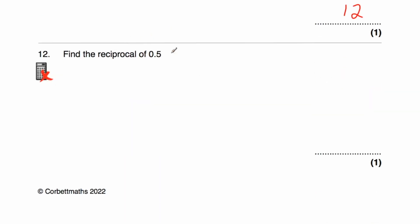Question 12 asks for the reciprocal of a decimal number. When finding the reciprocal of a decimal, it's useful to change it to a fraction first. 0.5 is a half, so we want the reciprocal of a half. Flipping it over gives 2 over 1, which equals 2. So the reciprocal of 0.5 is 2 — or think of it as: what do you multiply 0.5 by to get 1? The answer is 2.